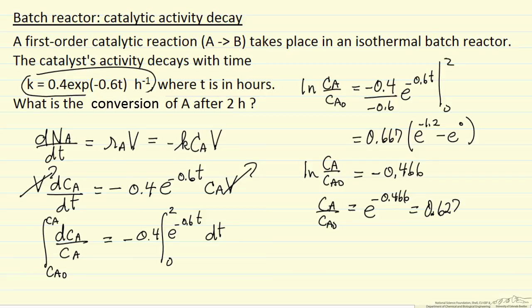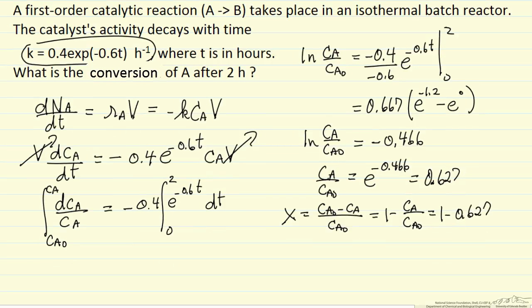Now the problem asks for conversion, and conversion for a liquid phase system is Ca0 minus Ca over Ca0, which is 1 minus Ca over Ca0, so that is 1 minus 0.627. So that means X is 0.373, or 37 percent conversion to two significant figures.